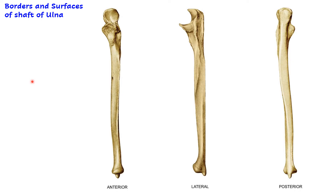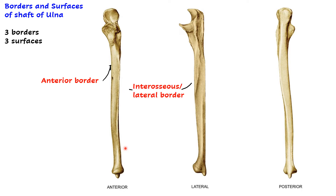The shaft of the ulna, like any other long bone, has three borders and three surfaces. The three borders are: the anterior border, starting from the ulnar tuberosity as a rounded border, turning posteriorly to reach the styloid process; the interosseous or lateral border, which is the sharpest border of the ulna; and the posterior border, starting from the triangular subcutaneous area of the olecranon process and also reaching the styloid process.